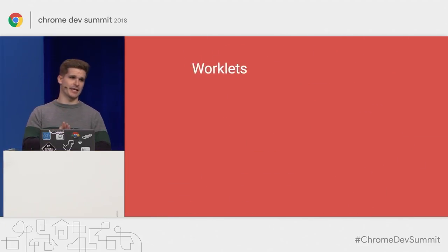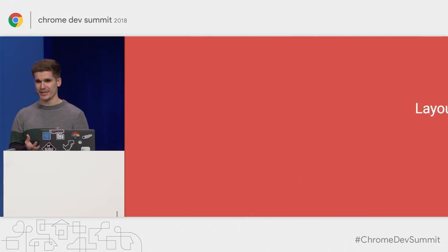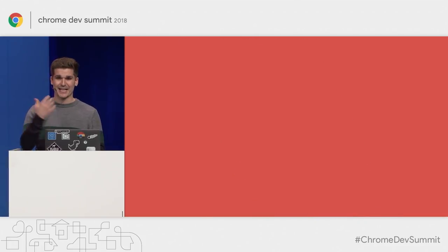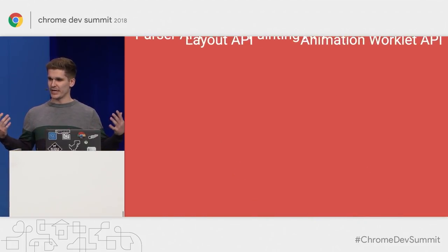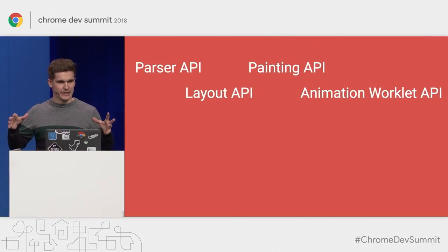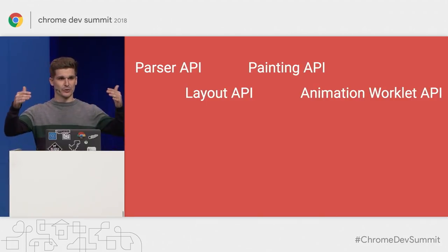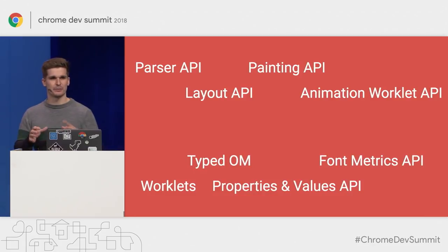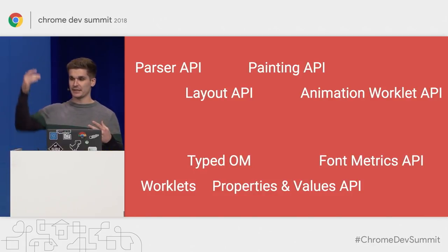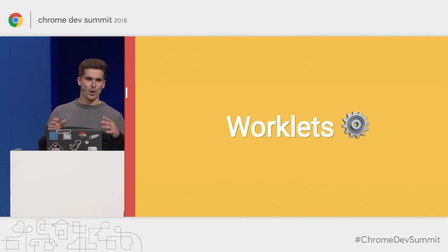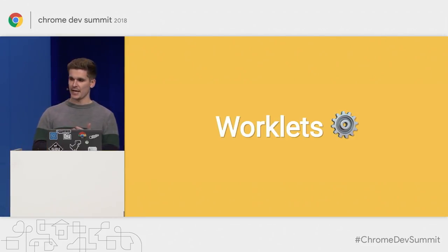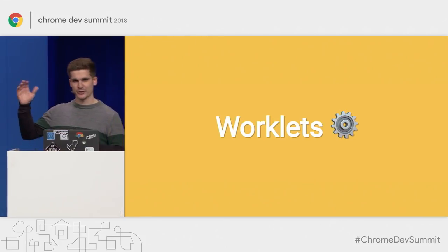Houdini can be super intimidating at first, because under the Houdini umbrella there are a lot of APIs, and you don't immediately know what to do with what. But they actually form a hierarchy. You have four high-level APIs that basically represent those four major stages of the rendering pipeline. Then you have lower-level APIs that build the underpinning and make these higher-level APIs possible. Specifically, worklets are really interesting — they're kind of the Swiss army knife within Houdini for performance. I want to take a second to explain these, because we're going to use them for the rest of the talk.